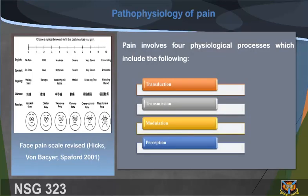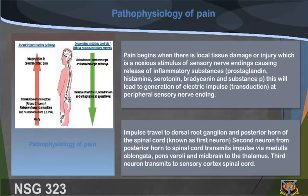Pathophysiology of pain involves four physiological processes: transduction, transmission, modulation, and perception. Pain begins when there is local tissue damage or injury — a noxious stimulus of sensory nerve endings causing release of inflammatory substances: prostaglandins, histamine, serotonin, bradykinin, and substance P. This leads to generation of an electric impulse (transduction) at peripheral sensory nerve endings. Impulses travel to the dorsal root ganglion and posterior horn of the spinal cord, known as the first neuron.